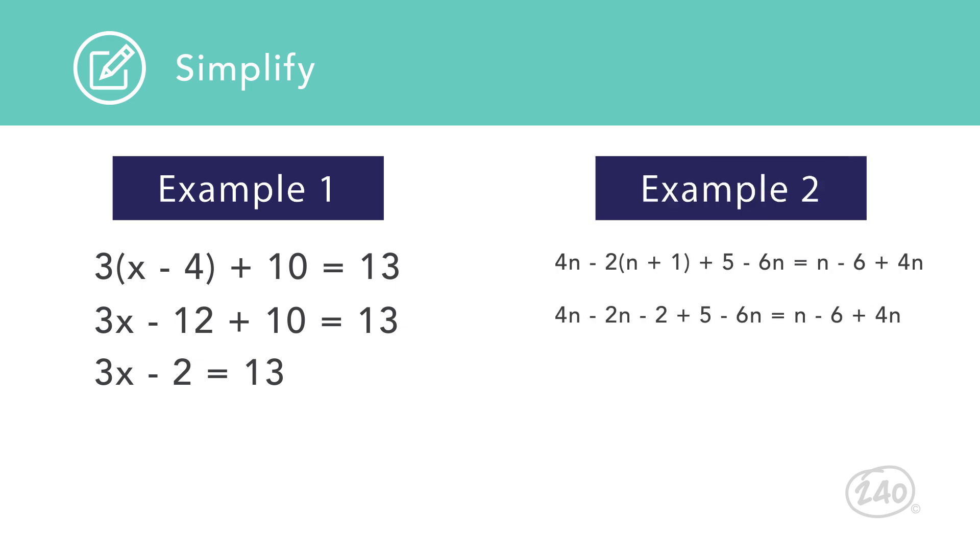In Example 2, after the distributive property has been applied, there are three terms with the variable n on the left side and two n terms on the right. It is important to only combine like terms on the same side of the equal sign. On the left, 4n, -2n, and -6n combine to give -4n. On the right, n and 4n combine to give 5n.